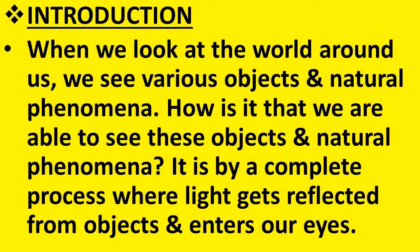Let us see what is light. When we look at the world around us, we see various objects and natural phenomena. How is it that we are able to see these objects? It is by a complete process where light gets reflected from objects and enters our eyes. We see the world around us because of light — when light gets reflected or bounces back from objects and enters our eyes, we see the objects.